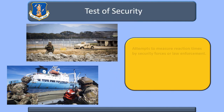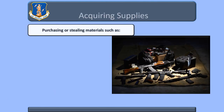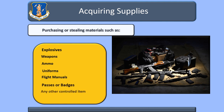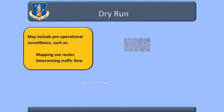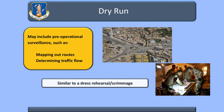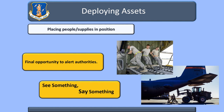Testing security can include attempts to breach security or measure response force reaction tactics and times. Acquiring supplies includes purchasing or stealing materials to conduct the attack. Dry runs are a dress rehearsal for the attack and may involve suspicious activities or events. Deploying access is the final phase before an attack and your last opportunity to alert authorities. Remember, if you see something, say something.